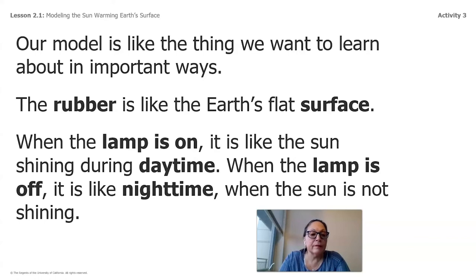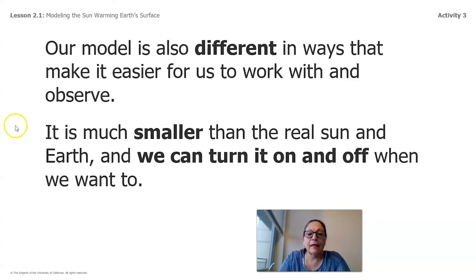So our model is also different in ways that make it easier for us to work with and observe. It is much smaller than the real sun and earth and we can turn it on and off when we want to. So if we were in the classroom, we can't bring the sun inside. Can we bring the sun inside? Nah. So scientists use things that might do the same thing. So by using the model, it would be just like you having the sun reflect on a surface. And that's exactly what we're doing today.